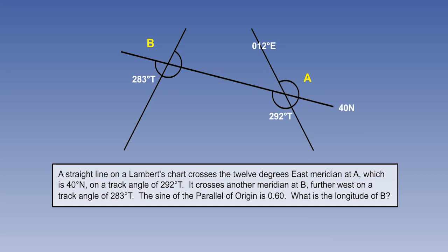Here is a worked example using this idea. A straight line on a Lambert's chart crosses the 12 degrees east meridian at A, which is 40 north, on a track angle of 292 degrees. It crosses another meridian at B, further west, on a track angle of 283 degrees. The sine of the parallel of origin is 0.6. What is the longitude of B?